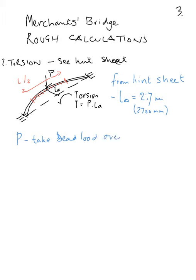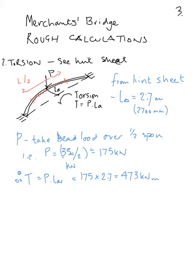The P is the dead load over half the span, so it's 350 kilonewtons. We take half of that which gives us 175 kilonewtons. The total torsion applied to the bridge is 175 times 2.7, which is 473 kilonewton metres. This is owing to its curved effect.